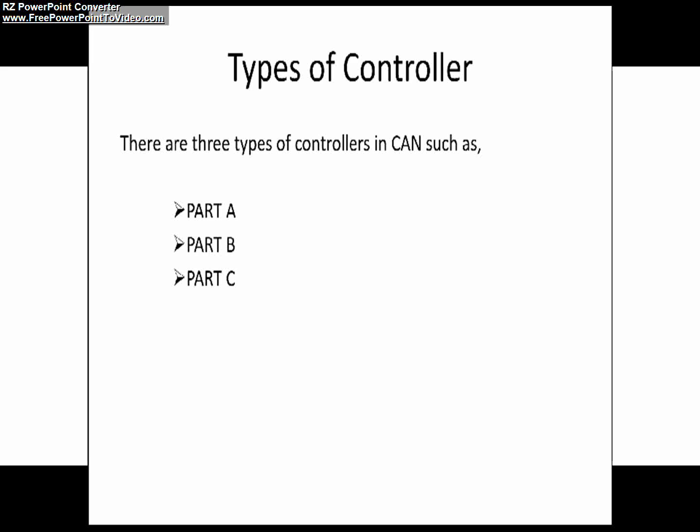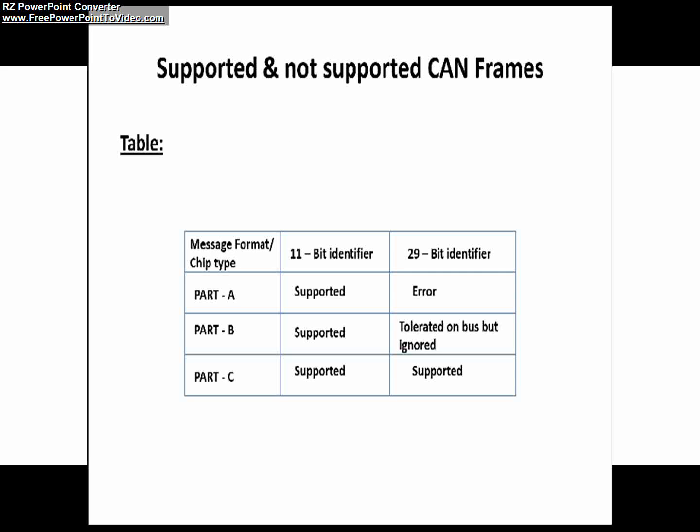Part A is also called CAN 2.0A, meaning it supports only the 11-bit identifier format of the CAN frame format. Coming to Part B, it is also called CAN 2.0B passive — we will see what that means. And Part C is CAN 2.0B active. These we will understand in the next slide. Now let's understand about Part A, Part B, and Part C chip types or controller types.